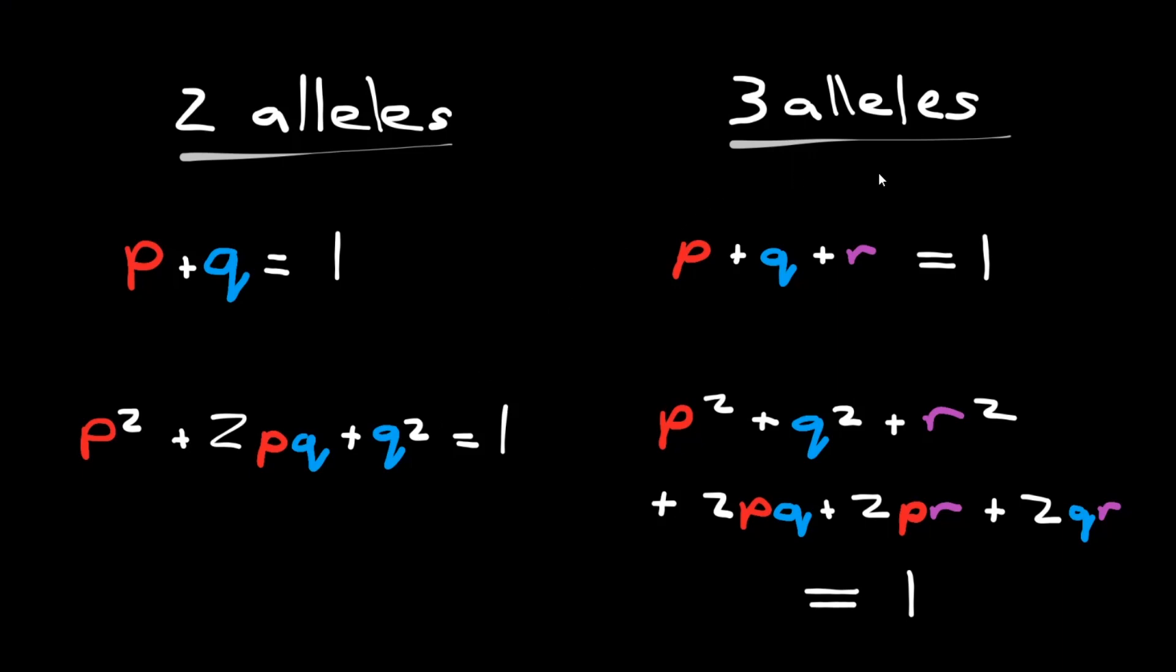Now if you add an allele, so you have a gene with three alleles instead of two, you now get this equation for the allele frequencies, so we've added this R here. And if you square this equation, FOIL it out, you now get the equation for the genotype frequencies. And as you can see, now there is a total of six possible genotypes from the different combinations of alleles.